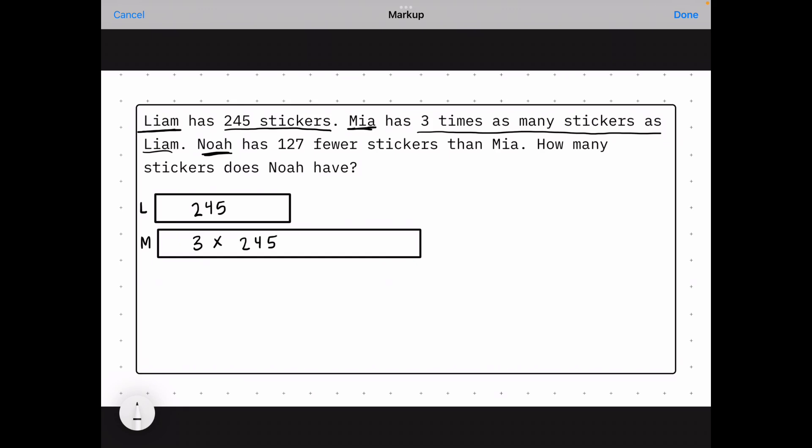And then Noah has 127 fewer stickers than Mia. So for Noah, we need to know how many stickers Mia has, which we don't know just yet. I'm going to put an M to represent that unknown amount. It's going to represent Mia. And we're going to subtract 127 because he has 127 fewer than Mia.